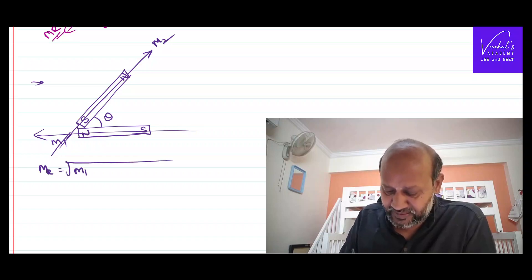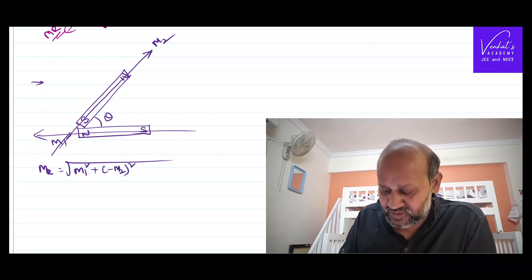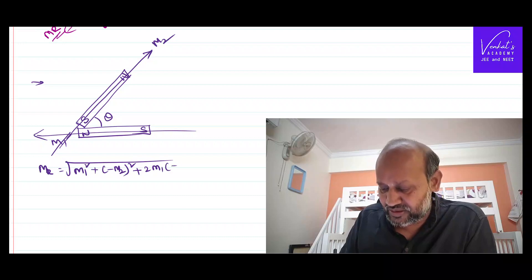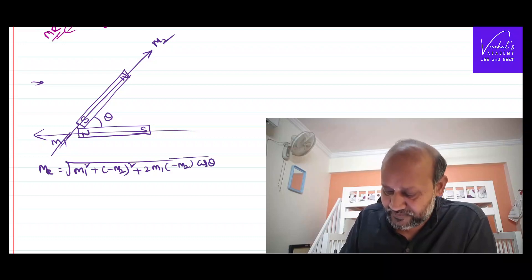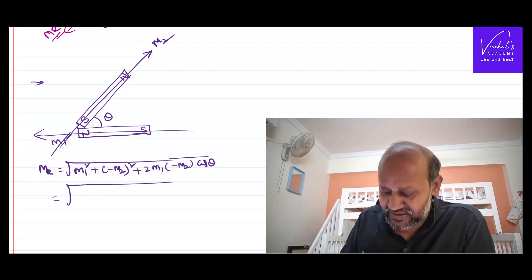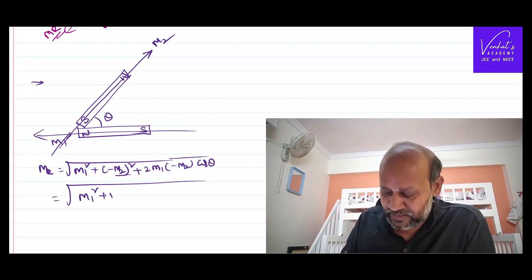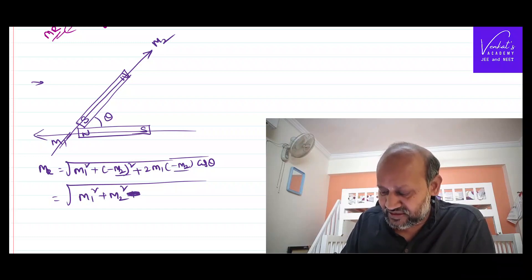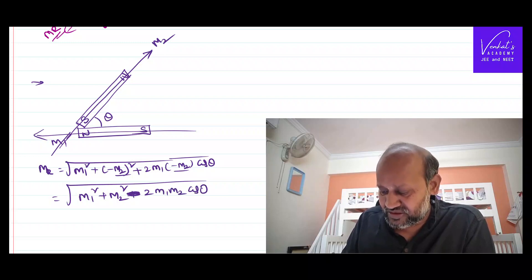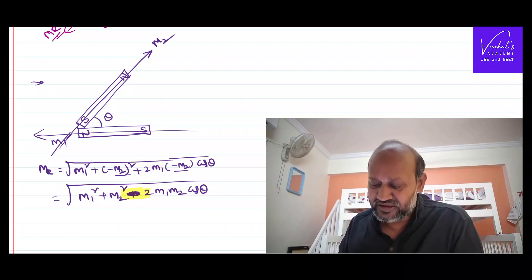Using the parallelogram law, but since the second vector is in the opposite direction we write minus m2: m resultant equals root of m1 squared plus (minus m2) squared minus 2·m1·m2·cos(theta). Notice the difference — earlier we had a plus, now we have a minus.